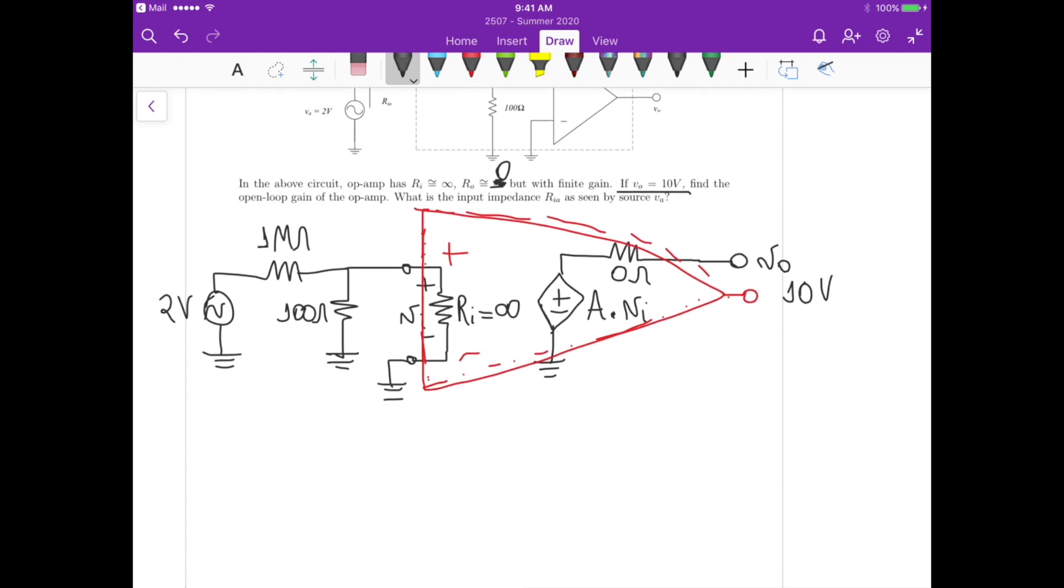Now what's the equation that we have for this particular circuit? First, because the output resistance is zero and there's no current flowing at the output—it's an open here—basically V_out is equal to A times V_i. So that's the voltage that we see at the output.